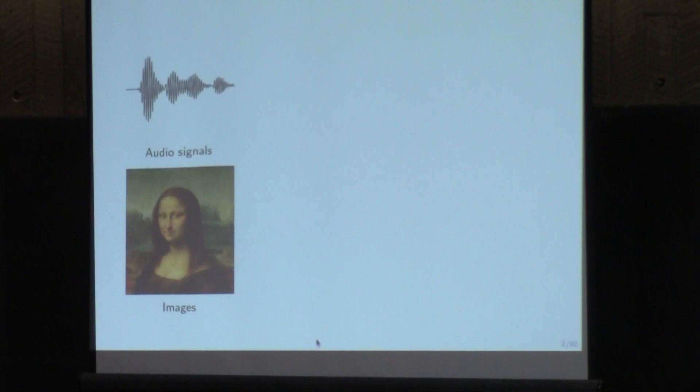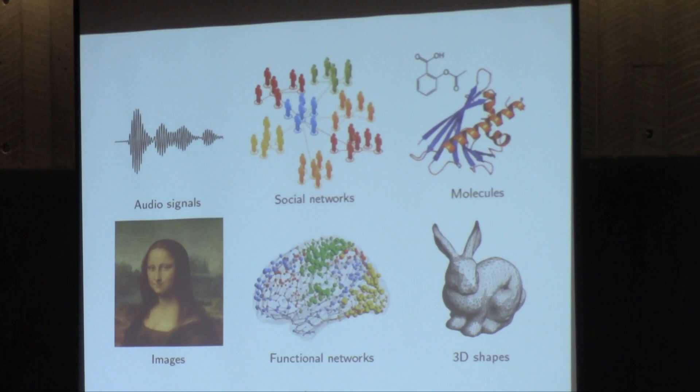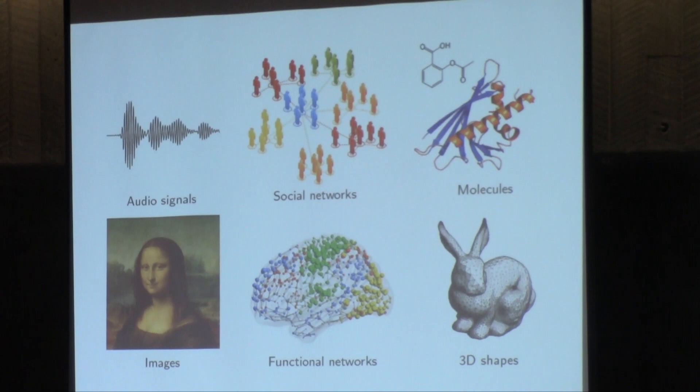But in many applications we have data that doesn't have these grid-like structures. For example, social networks are very large-scale graphs where users are nodes and edges represent relations or interactions. We can model molecules as graphs as well. Basically, graphs are very abstract models for any system of relations or interactions — you can think of almost anything as a graph.